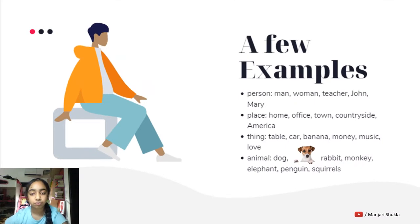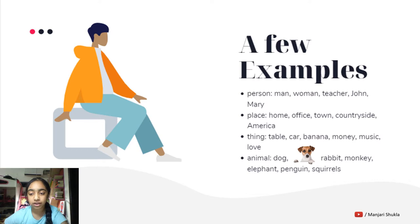A few examples could be: a person could be man, woman, teacher, or names like John and Mary. Place: home, office, town, countryside, America. Thing: table, car, banana, money, music, love. Animal: dog, monkey, rabbit, elephant, penguin, squirrels.